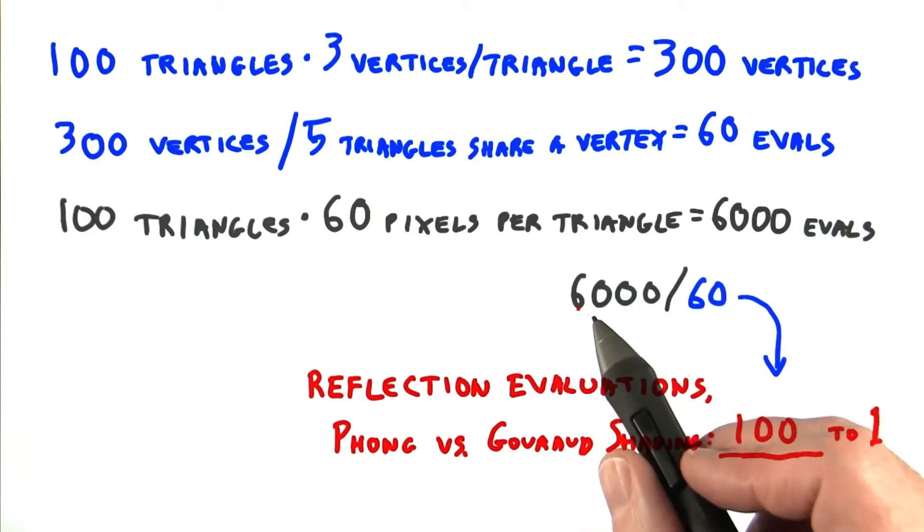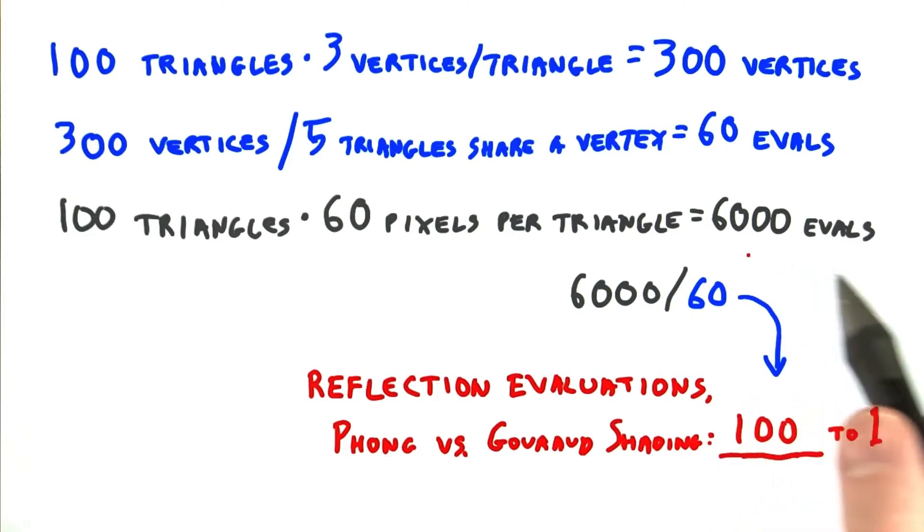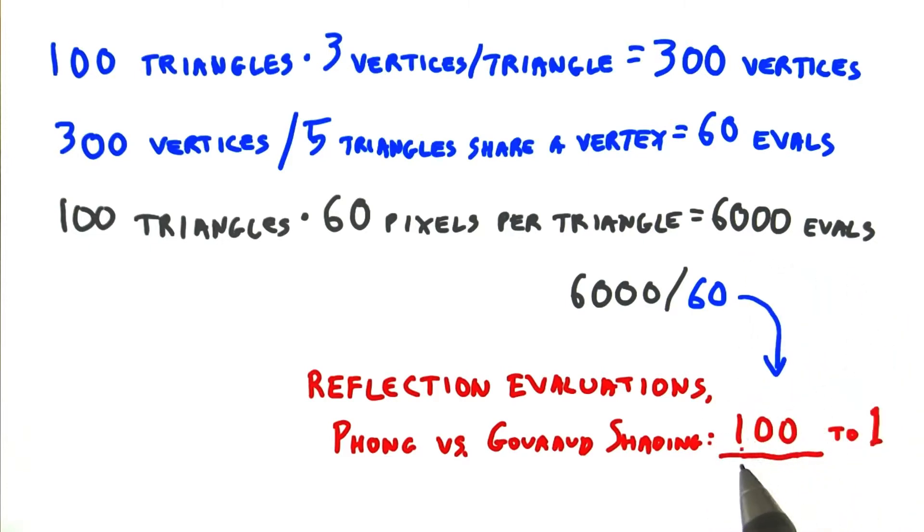6,000 pixel evaluations versus 60 vertex evaluations gives a ratio of 100 to 1. As you can see, it can be considerably more costly to evaluate per pixel than per vertex.